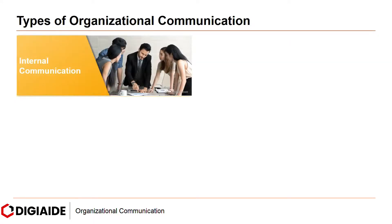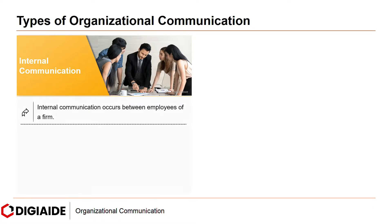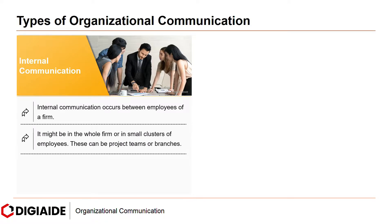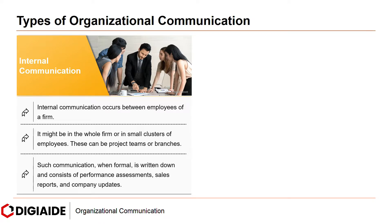Next, internal and external communication. Internal communication occurs between employees of a firm. It might be in the whole firm or in small clusters of employees, such as project teams or branches. When formal, it is written down and consists of performance assessments, sales reports, and company updates.